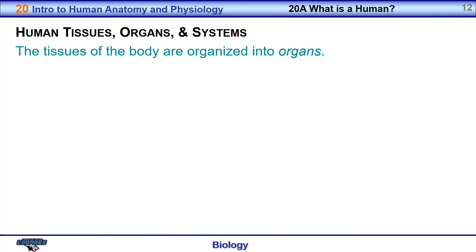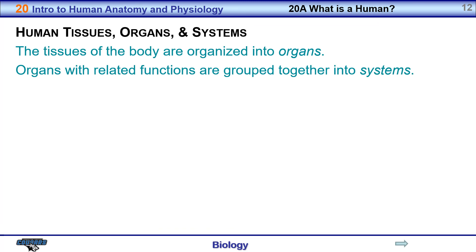Tissues of the body are organized into organs and then into systems. Organs with related functions are grouped together into systems. Tissues have a common function; when different kinds of tissues work together, you have an organ; and when organs with related functions are grouped together, it makes up a system.